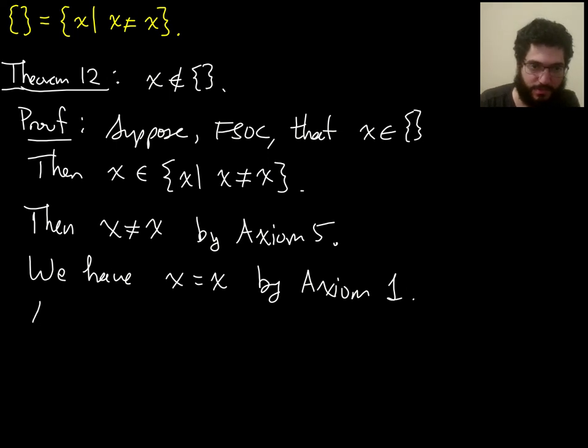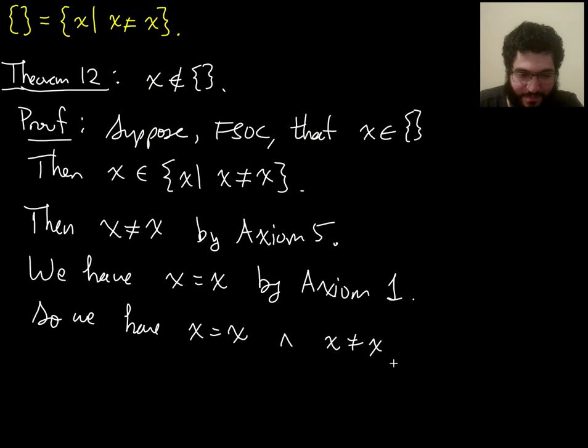So, we have x equals x and x not equals x, which is not x equals x. So, you see we have a proposition and not the same proposition. This is a contradiction, and so we're done with the proof. We have proven that the thing we assumed up here must be false, must be rejected.